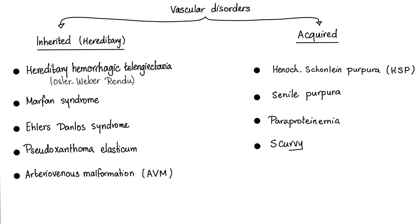Vascular disorders — we have another classification: inherited or hereditary, and acquired. Hereditary examples include hereditary hemorrhagic telangiectasia (Osler-Weber-Rendu), Marfan syndrome — a problem with elastin — Ehlers-Danlos syndrome, pseudoxanthoma elasticum, and arteriovenous malformation.